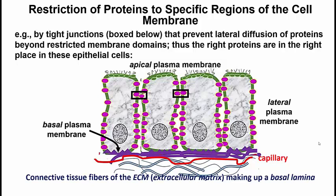Different proteins in membranes can be confined to different regions, in part by how the cells interact with one another and create barriers to the movement of these proteins. A tight junction is a barrier to the movement of proteins, ensuring that the right proteins are placed in the right location on membranes.